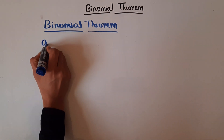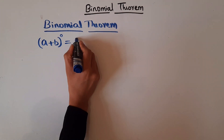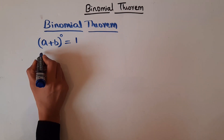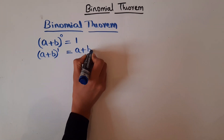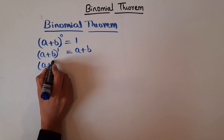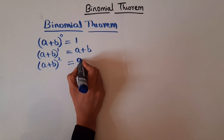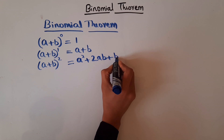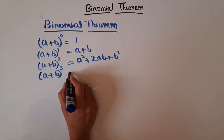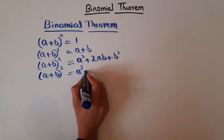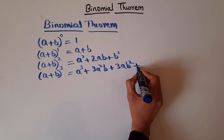Let's say we have a binomial expression (a + b) to the power 0. We know anything to the power 0 is 1. (a + b) to the power 1 is (a + b) itself. (a + b) to the power 2 is a² + 2ab + b². (a + b) to the power 3 — this also we have studied — is a³ + 3a²b + 3ab² + b³.